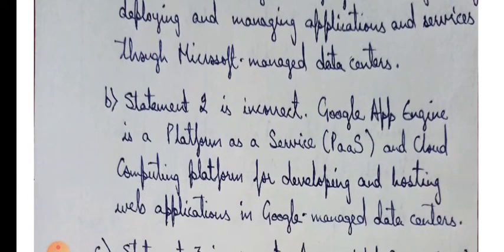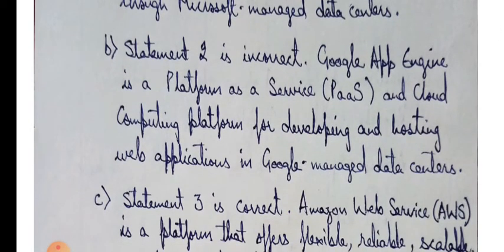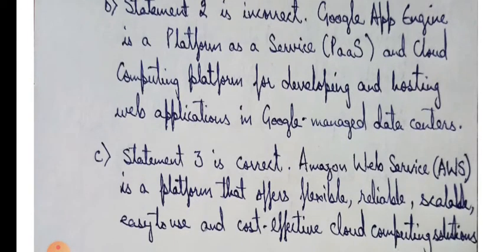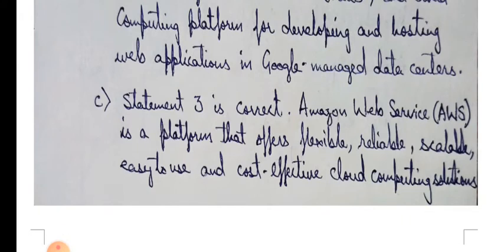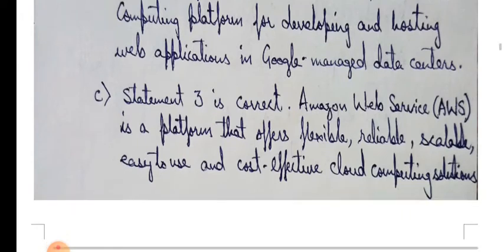Statement 2 is incorrect. Google App Engine is a platform as a service and cloud computing platform for developing and hosting web applications in Google managed data centers. Statement 3 is correct. Amazon Web Service is a platform that offers flexible, reliable, scalable, easy-to-use and cost-effective cloud computing solutions.